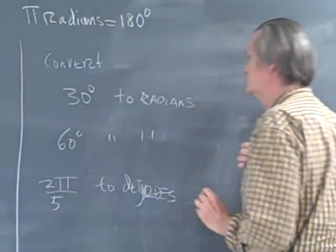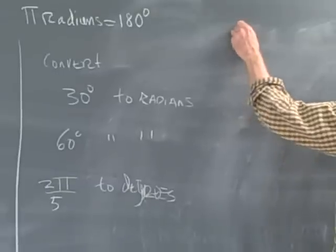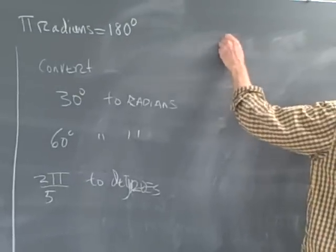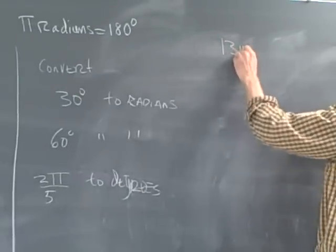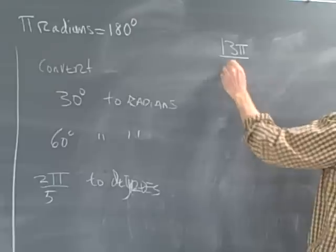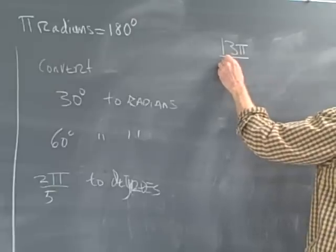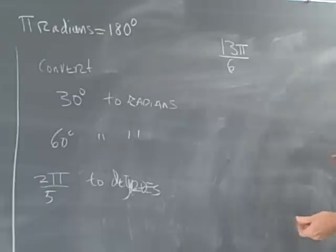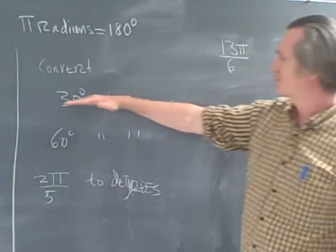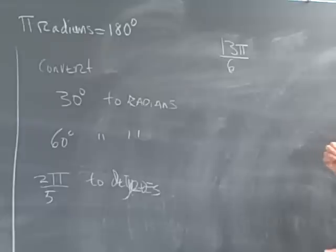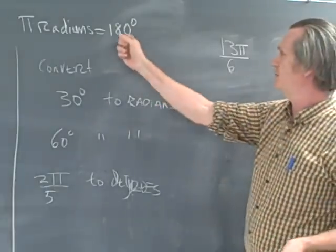And they'll also ask you some bizarre questions like, what angle is determined by 13π over 6, for example? So let's see, let's do these problems. We want to convert 30 degrees to radians, and we use the idea of units. We think about units.